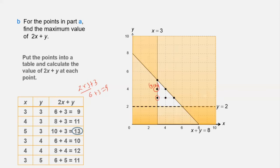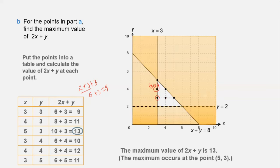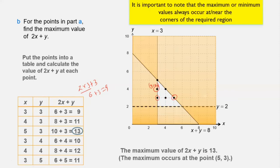The maximum value of 2x + y is 13, and it occurs at the point (5, 3). Remember: the maximum or minimum value will always occur at or near the corners of the required region. Always check the corner points of the required region.